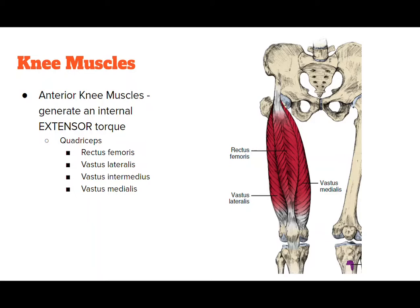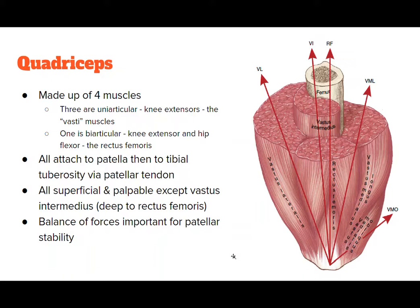We'll look at each of these muscles individually. Since they're anterior to the knee joint, they create an internal knee extensor torque. They are the rectus femoris, which is a two-joint muscle attaching on the AIIS, then the vastus lateralis, intermedius, and medialis. They all attach to the patella and then to the tibia. They're all superficial and you can palpate them — you can feel the anterior portion of your thigh for your quadricep muscle group, except you can't really feel the intermedius because the rectus femoris is on top of that muscle. These muscles all pull on the patella, so sometimes, if there's a muscle weakness between the medialis and the lateralis, it may be pulling the patella in one direction or the other.